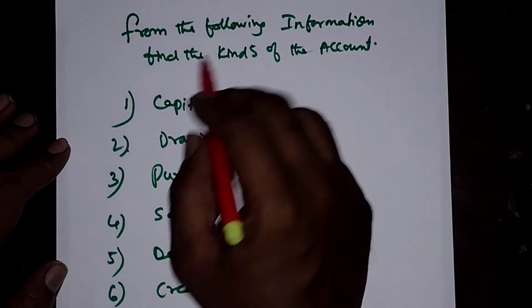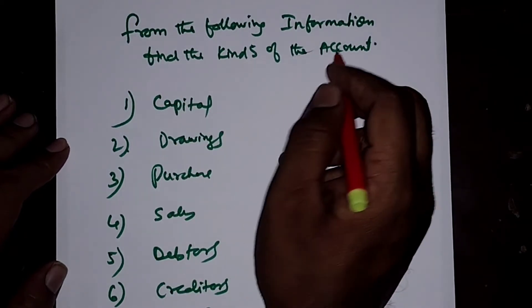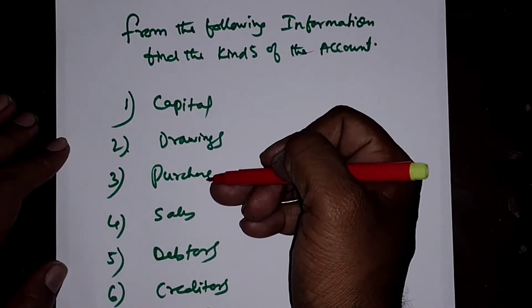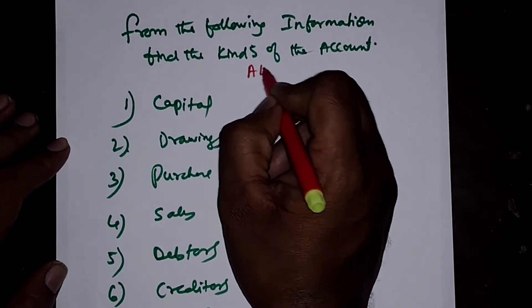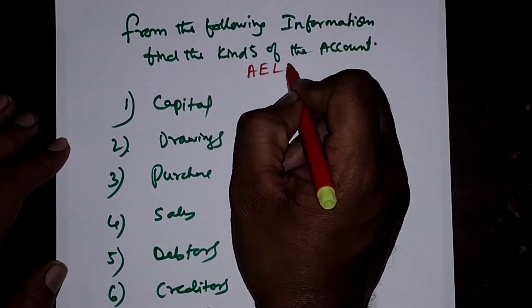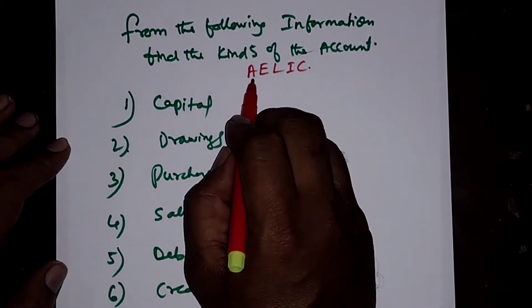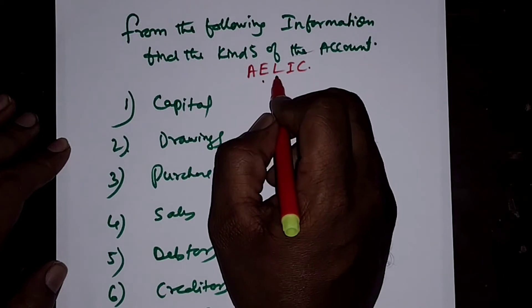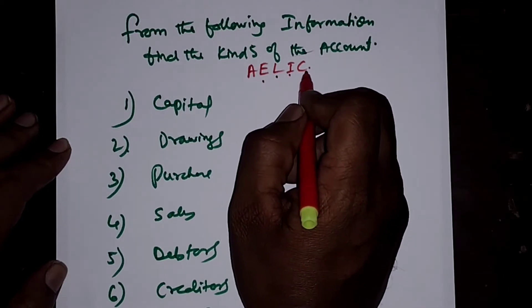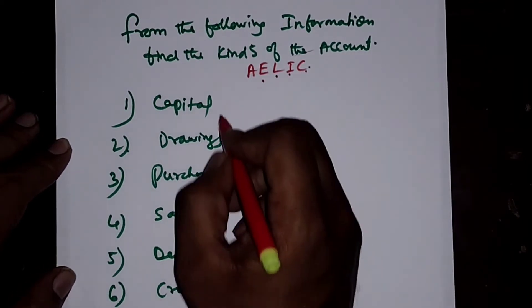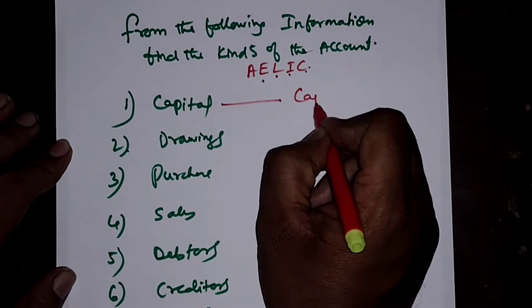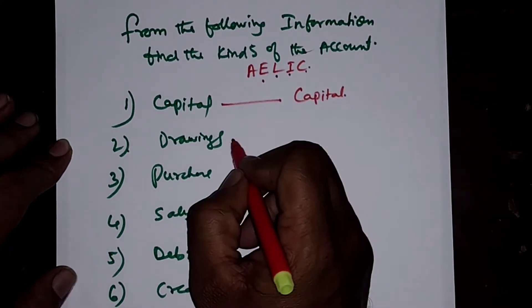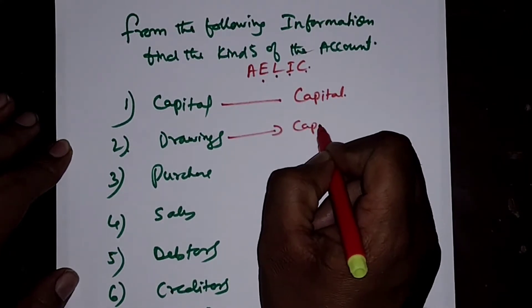From the following information, find the kinds of account — whether it relates to Capital (C), Assets (A), Expenses (E), Liabilities (L), or Incomes (I). Capital belongs to the Capital account. Even Drawings also fall under Capital Account.